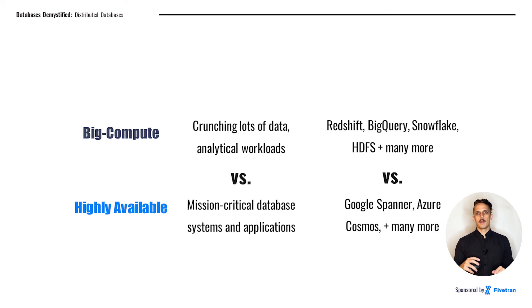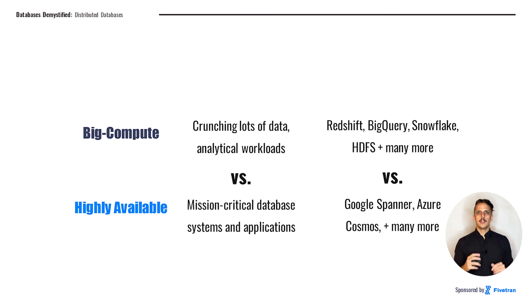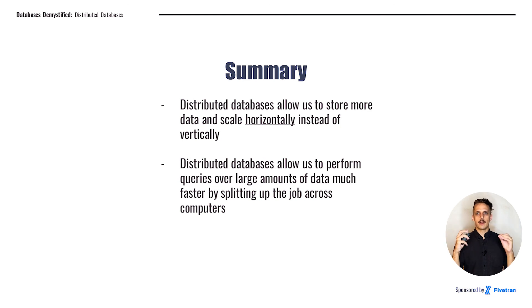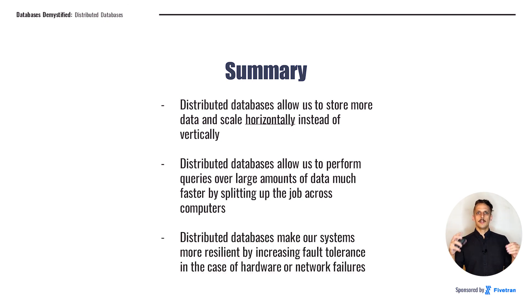In summary: in the big compute paradigm, we're crunching lots of data and handling analytical workloads. Tools like Redshift, BigQuery, Snowflake, and the MapReduce family are big compute distributed databases. In the high availability paradigm, we're working with mission critical databases and systems that can't go down — tools like Google Spanner and Azure Cosmos. Distributed databases allow us to store more data and scale horizontally by adding more smaller computers instead of continually increasing the size of one big computer, perform queries faster by running jobs in parallel, and make our systems more resilient by increasing fault tolerance in the case of hardware or network failures.